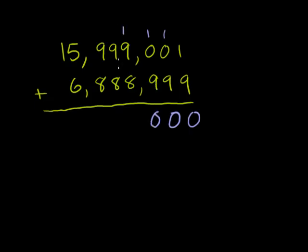Write the 0, carry the 1. 1 plus 0 plus 9 is 10. That's 10 again. Write the 0, carry the 1. Now, 1 plus 9 is 10, plus 8. 10 plus 8 is 18. Write the 8, carry the 1. 1 plus 9 is 10, plus 8 is 18. Write the 8, carry the 1. 1 plus 9 is 10, plus 8 is 18. Write the 8, carry the 1.